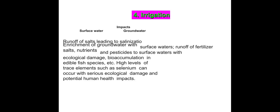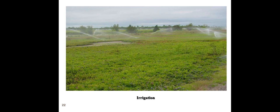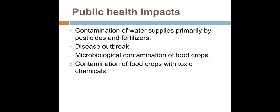The fourth impact is irrigation. There are two types: surface water irrigation and groundwater irrigation. Irrigation may cause runoff of salt leading to salinization, surface water runoff of fertilisers and pesticides causing ecological damage to fish species, and high levels of trace elements such as selenium, which can cause serious ecological damage and potential human health impacts.